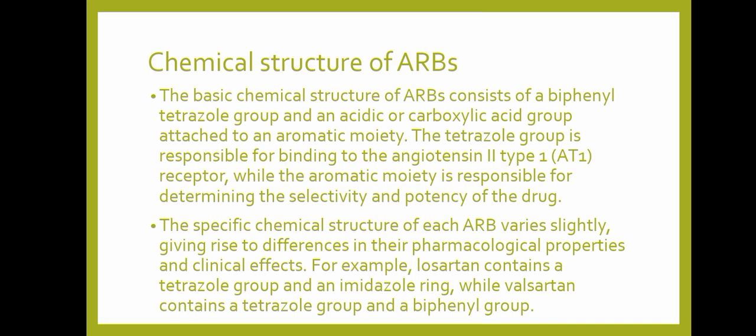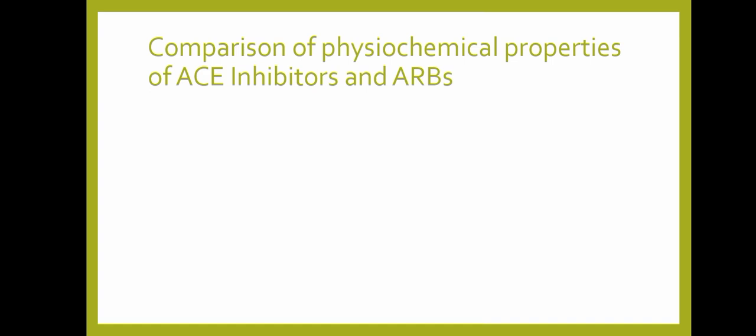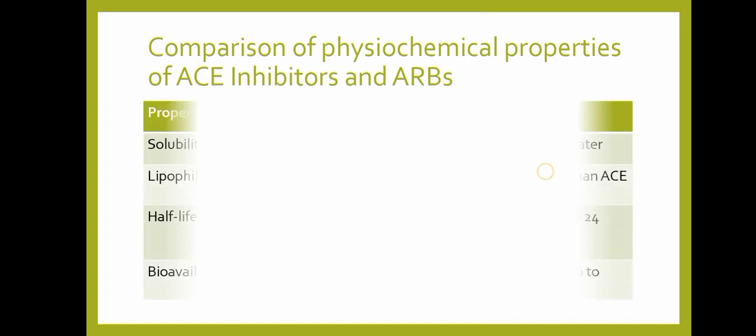Chemical structure of ARBs. The basic chemical structure of ARBs consists of a biphenyl tetrazole group and an acidic or carboxylic acid group attached to an aromatic moiety. The tetrazole group is responsible for binding to the angiotensin 2 type 1 receptors, while the aromatic moiety determines the selectivity and potency of the drug. The specific chemical structure of each ARB varies slightly, giving rise to differences in pharmacological properties and clinical effects.